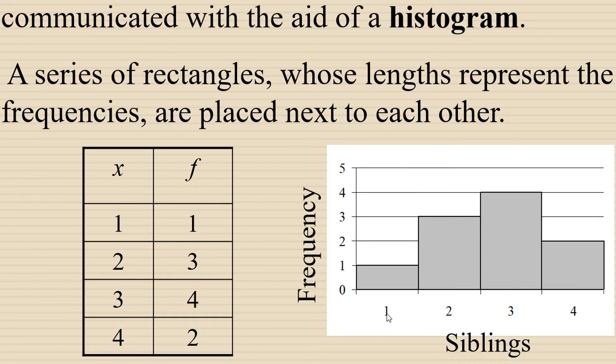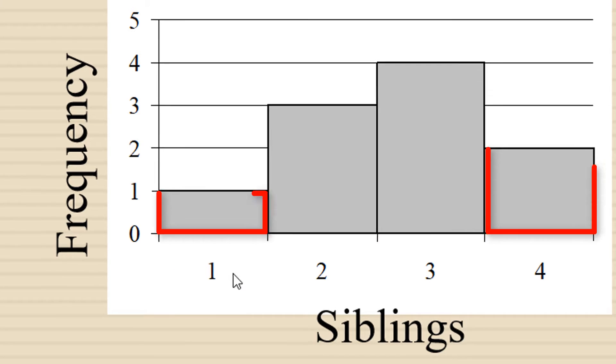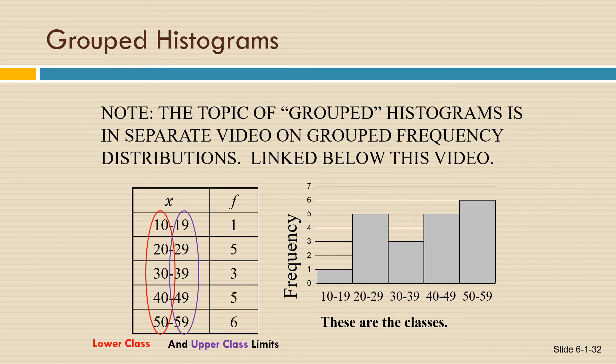For example, this data is indicating the number of families who have 1, 2, 3, or 4 siblings in the family. You can see from the chart very easily that most of the families that were surveyed have 3 siblings, whereas it's less common to have 1 or 4.